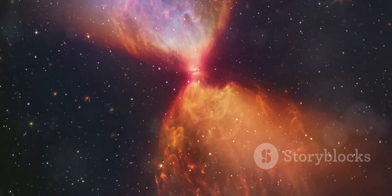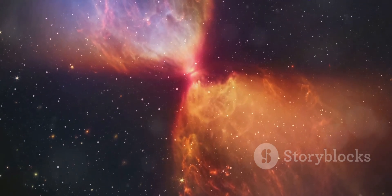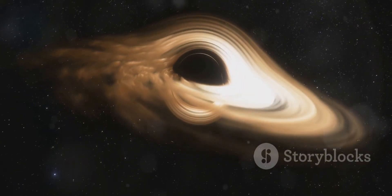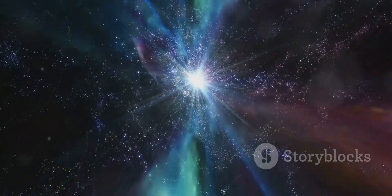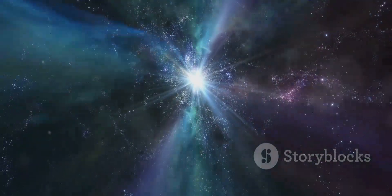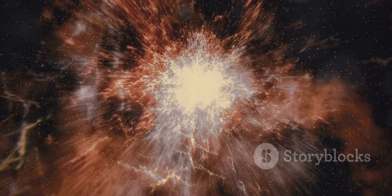If a white dwarf is in a binary system with a companion star, it can begin to pull material from its companion. This material accumulates on the surface of the white dwarf. Eventually, the white dwarf accumulates enough material to reach a critical mass. This critical mass is known as the Chandrasekhar limit.